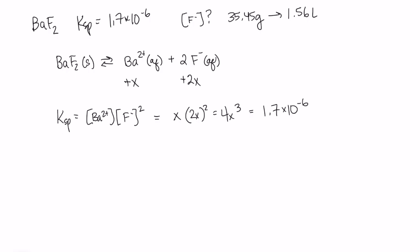When we solve for x, we get 0.0075. And that means that our concentration of barium would be 0.0075, and our concentration of fluoride would be twice that much, 2x from our table, 0.015 molar.